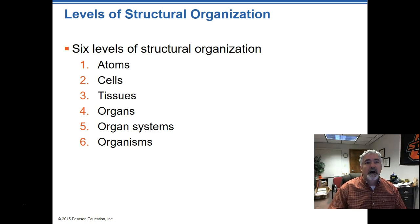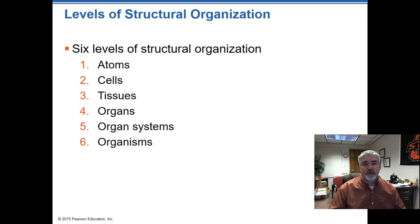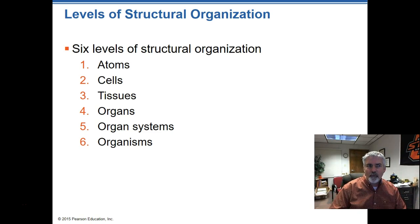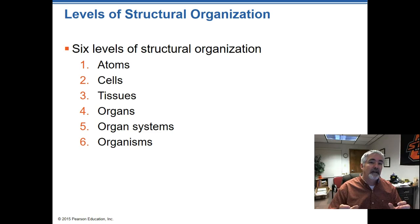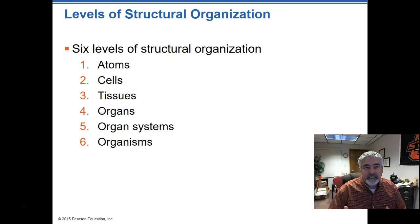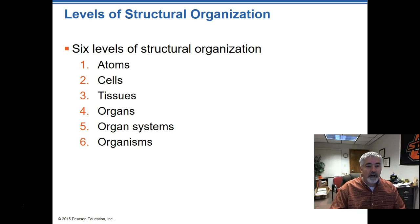There are six levels of organization: we start with atoms and move on to cells, tissues, organs, organ systems, and then the entire organism — that's how the body is made up. This is also how the book plays out. We start talking about atoms, then cells, then tissues, then organs and organ systems together. We're going to start out at a very low level and build up on that.